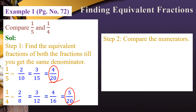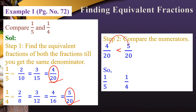Step 2: Compare the numerators. Since the denominators are the same, we compare the numerators 4 and 5. Since 5 is bigger, we place the less-than symbol accordingly. Therefore, 1/5 is less than 1/4.